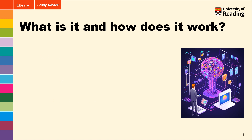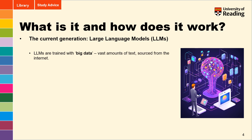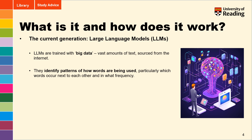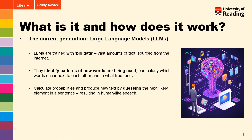So what is the current underlying technology of generative AI? Well, that would be large language models, or LLMs. LLMs are trained with big data — vast amounts of text sourced from books, articles, websites, and other text-based sources found online. Using this as training data, LLMs identify the patterns of words and how they're being used, recording particularly which words occur next to each other and in what frequency. From this, probabilities are calculated and used to produce new combinations of text, guessing the next likely element in a sentence resulting in human-like speech.